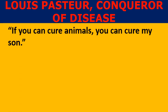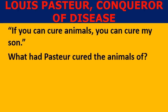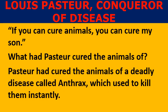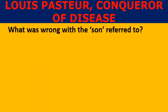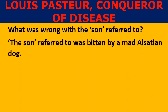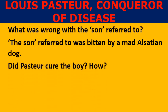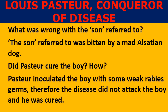'If you can cure animals, you can cure my son.' What had Pasteur cured the animals of? Pasteur had cured the animals of the deadly disease called anthrax, which used to kill them instantly. What was wrong with the son referred to? The son had been bitten by a mad Alsatian dog. Did Pasteur cure the boy? Pasteur inoculated the boy with some weak rabies germs, so the disease did not attack the boy and he was cured.